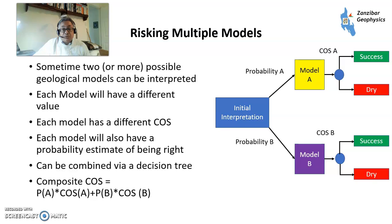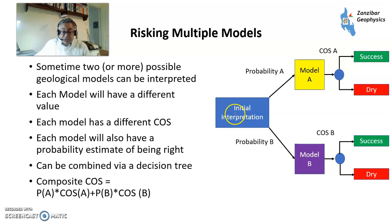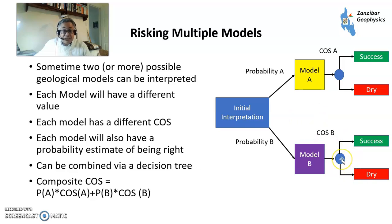But sometimes you'll have multiple models — two or more models may be possible. In this situation you've got two models, though you could obviously have more in different situations. So you've got your initial interpretation, your model A and your model B. Model A has a chance of success and a chance of being dry. Model B has a chance of success and a chance of being dry.